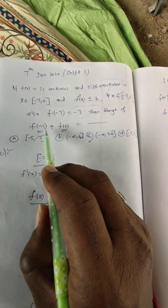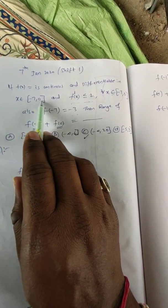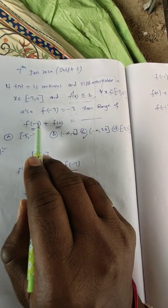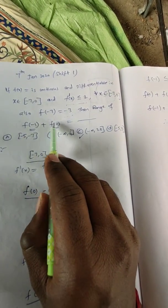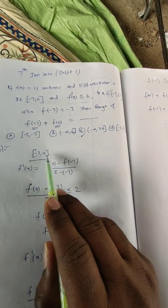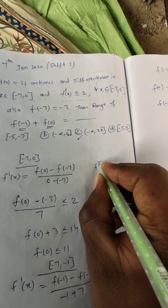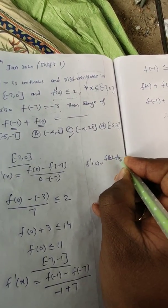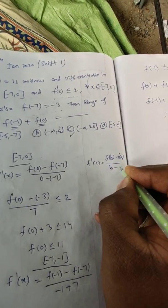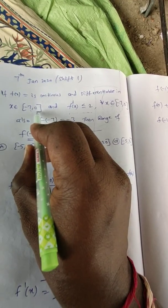Here the main thing is this closed interval given [-7, 0]. According to this we have to take the intervals. So let us take [-7, 0]. What Lagrange's mean value theorem says is that f'(c) = [f(b) - f(a)] / (b - a). Here this is a, this is b.